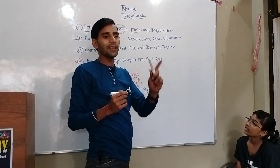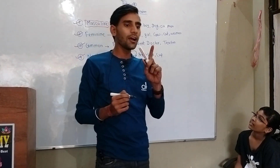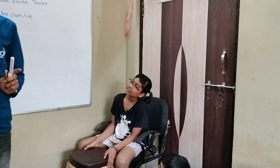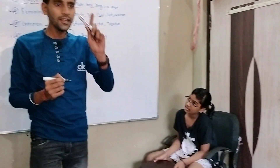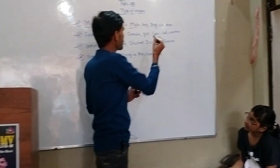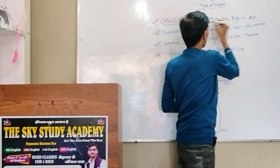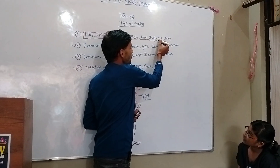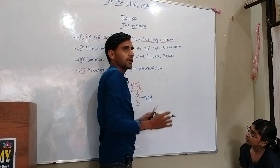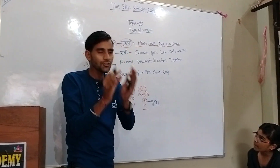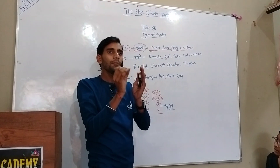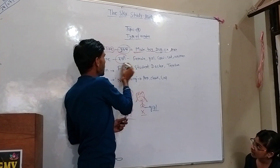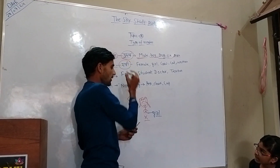I have to say male, man, boy, dog, ox — what are all these things? Masculine gender. What is feminine? Female, women, girl, cow, cat — what are all these things? Feminine gender.